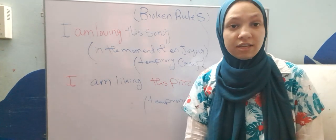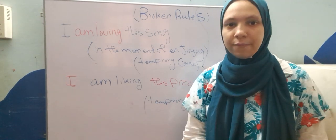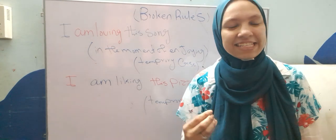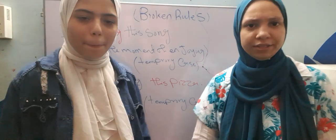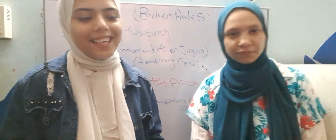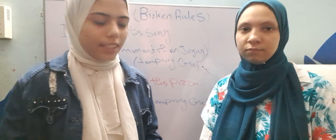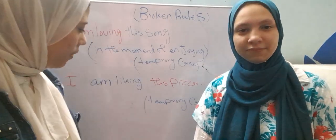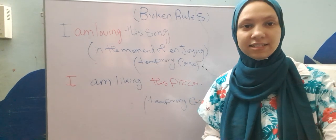Sometimes native speakers use stative verbs in progressive form. For example, 'I'm loving this song' expresses a temporary feeling in the moment of enjoyment. Similarly, someone who usually dislikes pizza might taste it and say 'I'm liking this pizza', indicating an unexpected temporary case. This rule-breaking by native speakers reflects a temporary emotional state, though it's not standard usage.